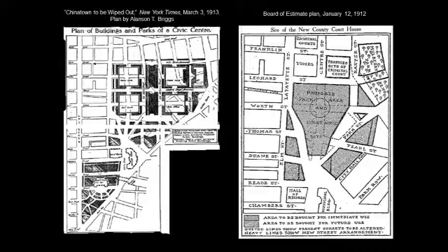What you see on the right is the final site plan of the Board of Estimate, led by George McEnany — Charles will tell us more about it — and that was essentially the plan decided upon in terms of the condemnation.